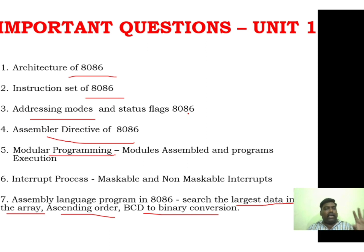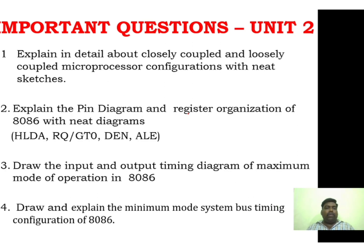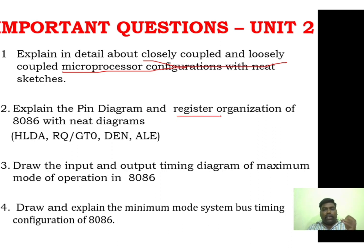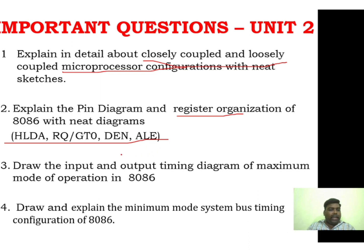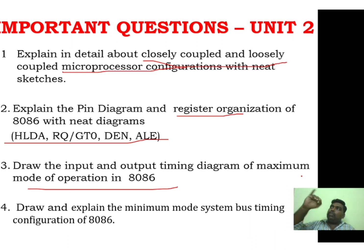If you cover 5 to 6 questions, that is more than enough. Remember the configuration — you have a pin diagram. You can see the register and explain it: register organization, like this. There is the mode of operation of 8086. The last one is minimum mode system and maximum mode system. Both maximum mode and minimum mode are available. This covers 4 questions from Unit 2.